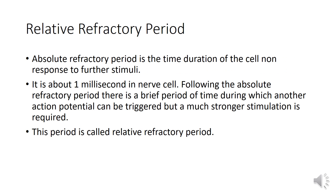Relative refractory period: The absolute refractory period is the time duration during which the cell shows no response to further stimuli; it is about one millisecond in nerves. Following the absolute refractory period, there is a brief period of time during which another action potential can be triggered, but a much stronger stimulation is required. This period is called the relative refractory period.